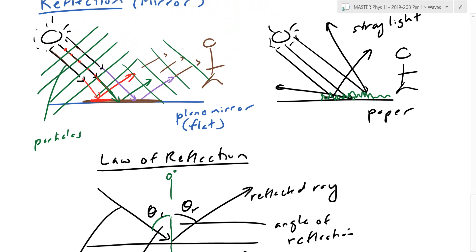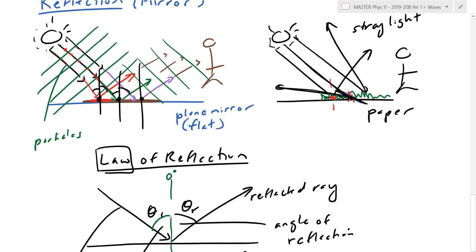Looking back at the diagram, every beam — red, green, purple — has its own normal. But the incoming and outgoing angles are always equal. This law applies even to stray light on rough surfaces. Because of the microscopic jagged edges on paper, the normal at each point is oriented differently. So even though the incident angle equals the reflected angle at every point, the randomly oriented normals cause light to bounce off in random directions.